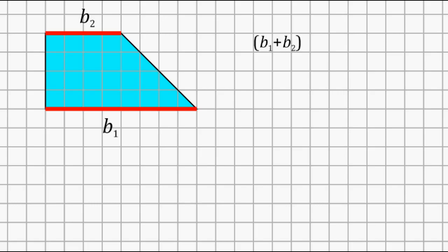Now, after we add those two values together, what we do is divide that total by 2. And after we take that total and divide by 2, we multiply by the height of the trapezoid, which is the distance that the two parallel lines are from each other.